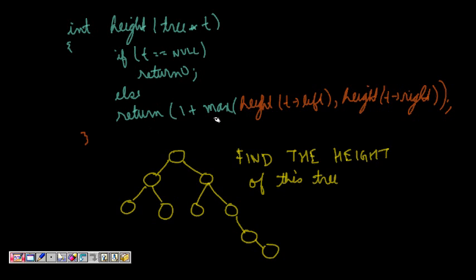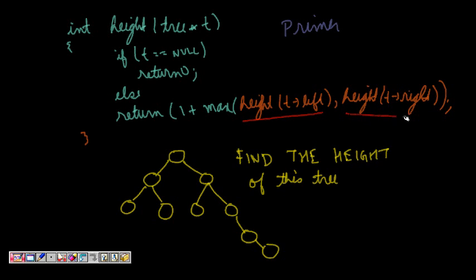So let's see how to find the height of a tree — a primer for height. I pass the root node and call int height. If t is null, it is a trivial case — height is 0. Otherwise I return 1, because I already have a node, so I return 1 plus the maximum of height of left subtree and height of right subtree. Always remember to have a base case when writing a recursive function.